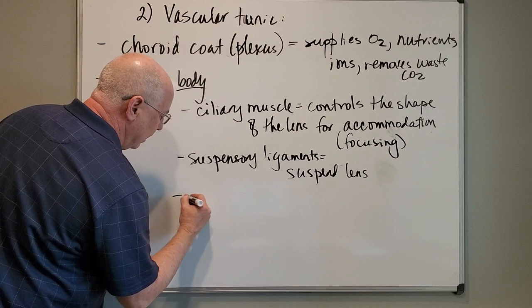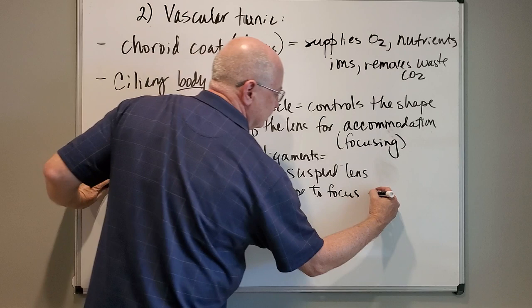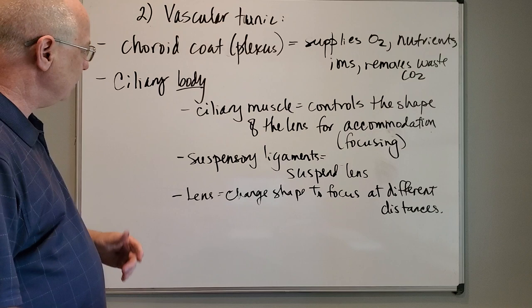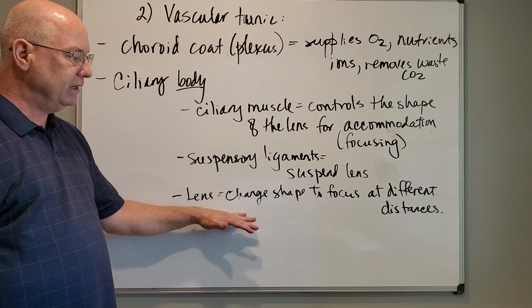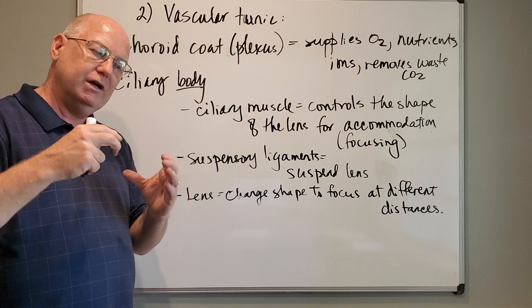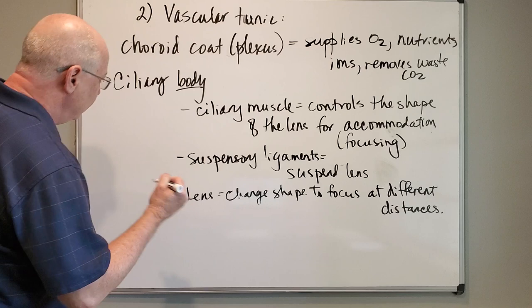The lens itself can change shape to focus at different distances. When the ciliary muscle contracts, the lens becomes more rounded. When it relaxes, the lens is pulled into a flatter shape. The lens is made of elastic lens fibers that allow it to refract or bend light to focus at different distances.